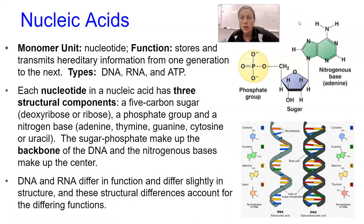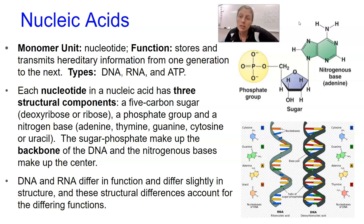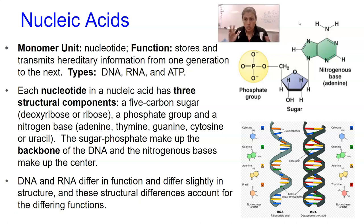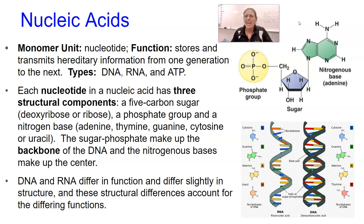We're doing our last macromolecule today - a super complex one because it has the most elements in it. It's carbon, hydrogen, and oxygen just like carbohydrates and lipids, it's got nitrogen just like protein, and then it also has phosphorus. So it's the most complex as far as elements are concerned. The monomer unit of a nucleic acid is a nucleotide. Its job is to store and transmit our hereditary information - your DNA. There's DNA, there's RNA, and then there's a really cool molecule called ATP.